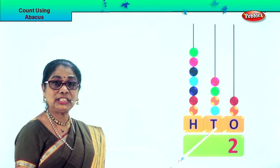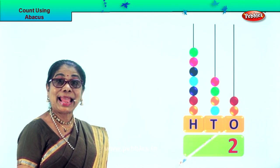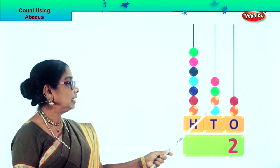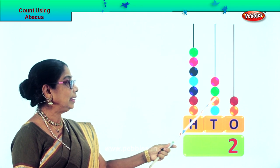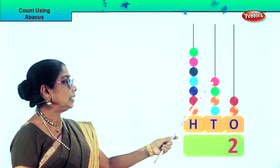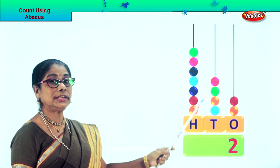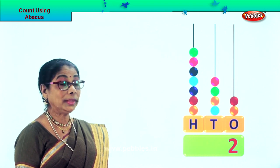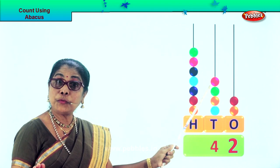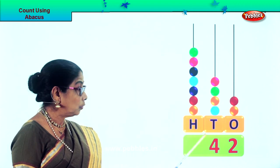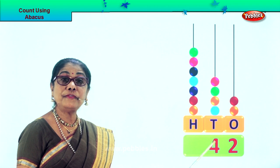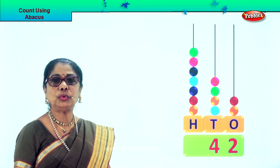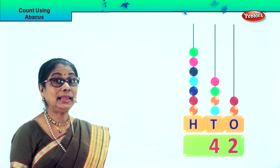Let's go to the 10s place. Count in 10s: 10, 20, 30, 40. There are 4 beads, so we write down 4 beads — 40. So we put down number 4.